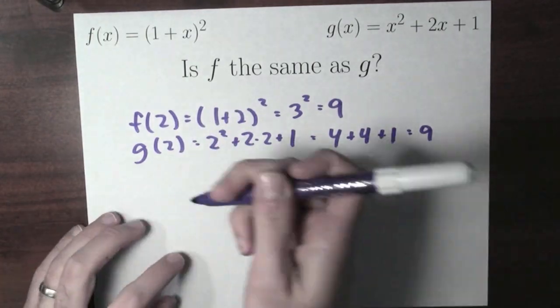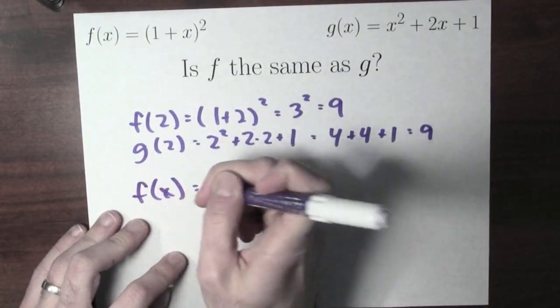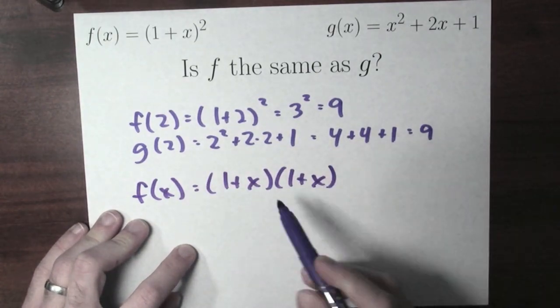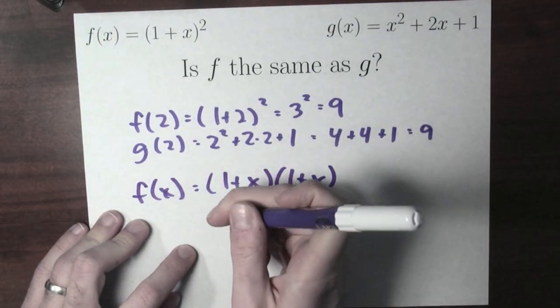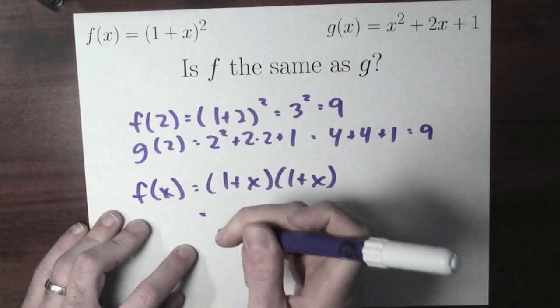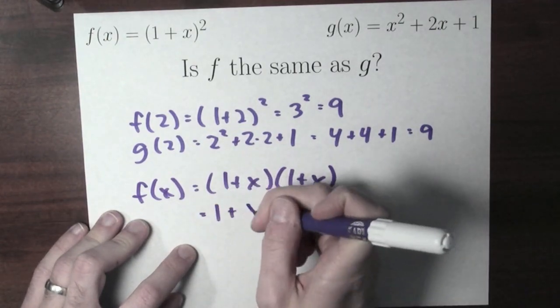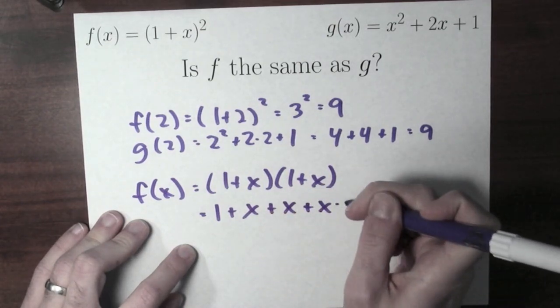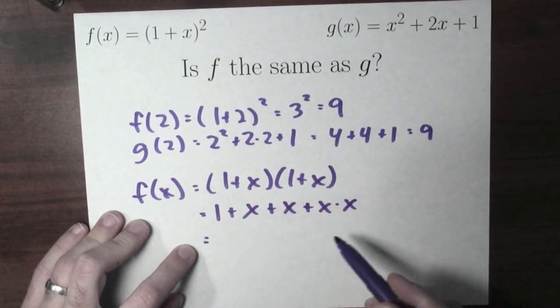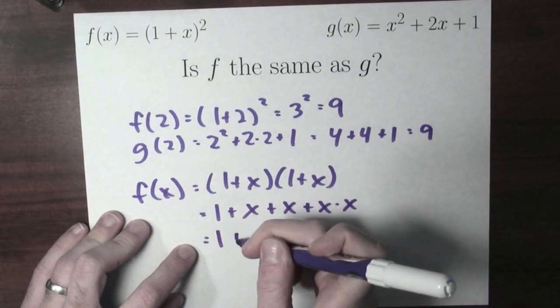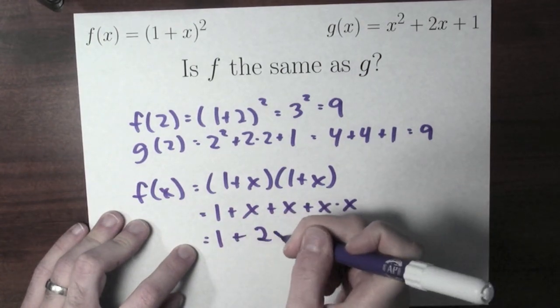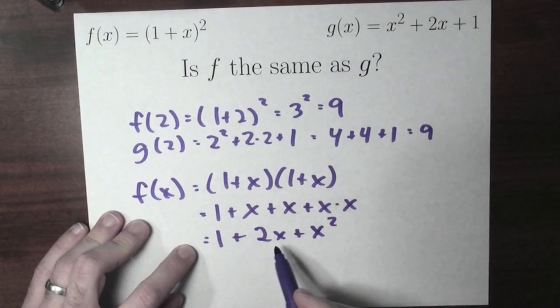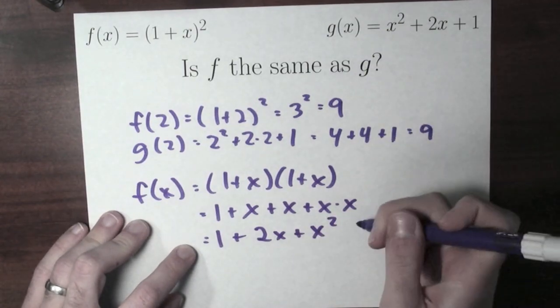And yet, look at this. f of x, for any value of x, is (1 + x) times (1 + x). That's (1 + x) squared. Well, I could expand this out. 1 times (1 + x), and then x times (1 + x). And I could combine some of these terms. 1 plus x plus x is 2x. x times x is x squared. Look, 1 plus 2x plus x squared, that's g of x.